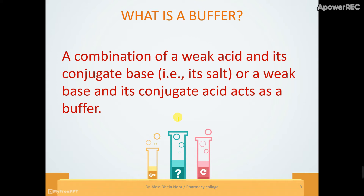A buffer is a combination of a weak acid and its conjugate base, or a weak base and its conjugate acid. There are two criteria for a buffer solution: first, we must use a weak acid or weak base — we cannot use a strong acid or strong base. The second criteria is the conjugate salt — the conjugate base or conjugate acid — both must be present in the buffer solution.